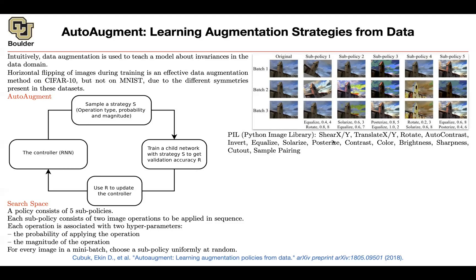For instance, you can do some shear in the x direction or y direction, translate the image in the x or y direction, rotate it, adjust the contrast, invert, equalize. In addition to that, you can have cutout, where you take a portion of your image and mask it — similar to random erasing. In total, you are going to have 16 operations that you can choose from.